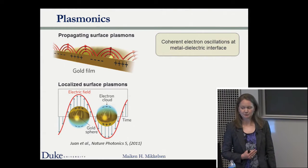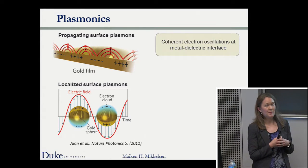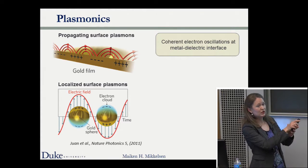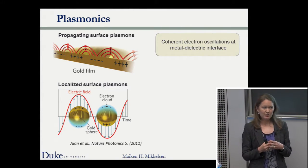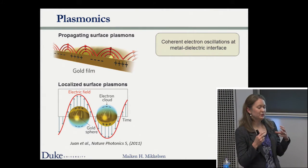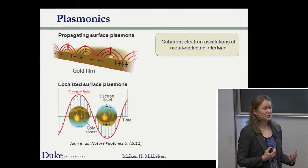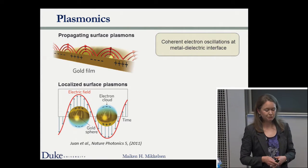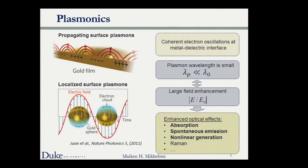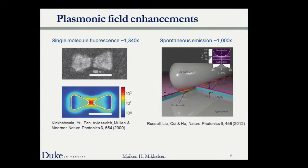We utilize coherent electron oscillations at a metal-dielectric interface, such as a gold-air interface. We can also have localized surface plasmons in small metal nanoparticles such as spheres. These free electrons oscillate at a particular frequency — the plasmon resonance — which depends upon the size, shape, and material of our nanoparticles, all much smaller than the wavelengths of light. This allows us to excite these structures and get large field enhancement in small regions, enabling enhanced absorption, spontaneous emission, and nonlinear generation.